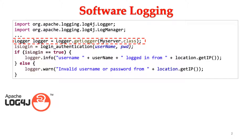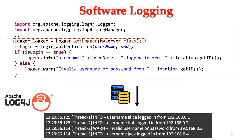Log4j provides multiple threads support so that the logs are not interleaved with each other. It also provides a timestamp and filtering mechanism such as verbosity level to filter logs. Hence, during runtime, the following log messages will be generated.